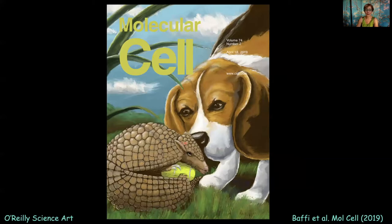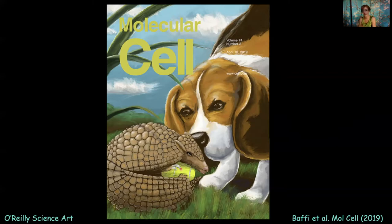The artist who drew the cover for the issue when the paper came out had an interesting way of depicting this. She depicts PKC as an armadillo tightly holding onto its hydrophobic motif phosphate, with the phosphatase PHLPP longingly looking at it. As long as this armadillo is auto-inhibited and holds together, both the phosphate and the armadillo are safe. But if anything happens so that it opens up, the phosphatase PHLPP — the beagle — takes the phosphate, and the degradatory pathways take over.